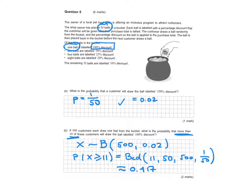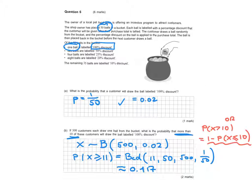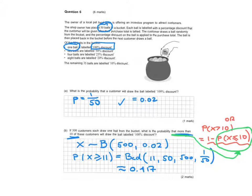Using the complement: P(X > 10) = 1 − P(X ≤ 10). We subtract the probability that X is 10 or less from 1. Note: since the question asks for more than 10, the value 10 is excluded, which is why we use X ≤ 10 in the complement.